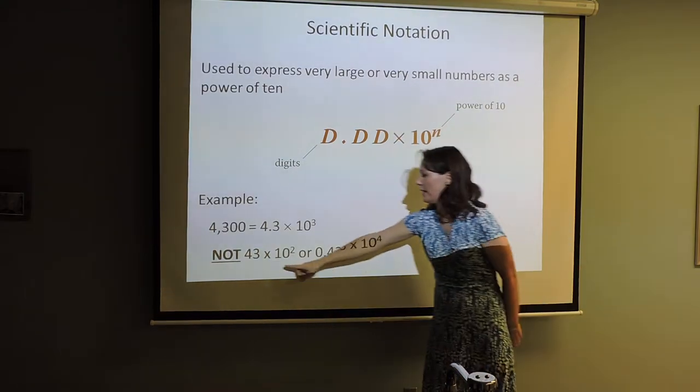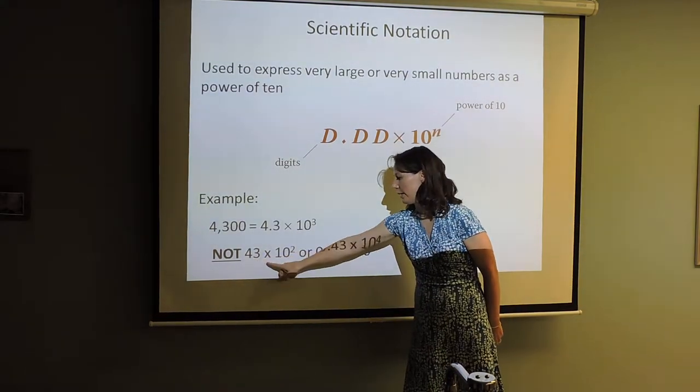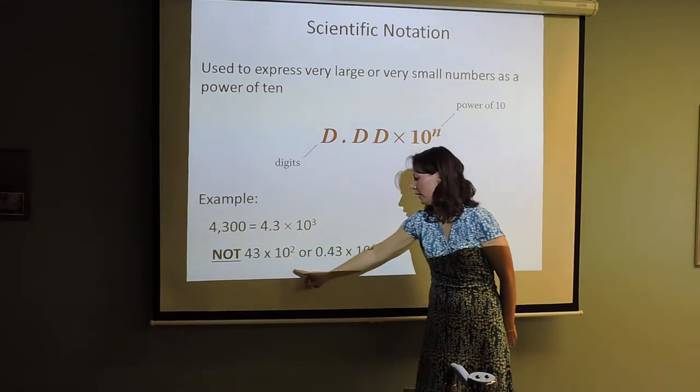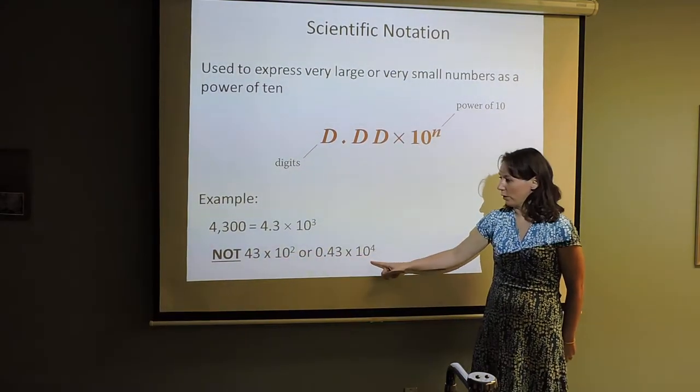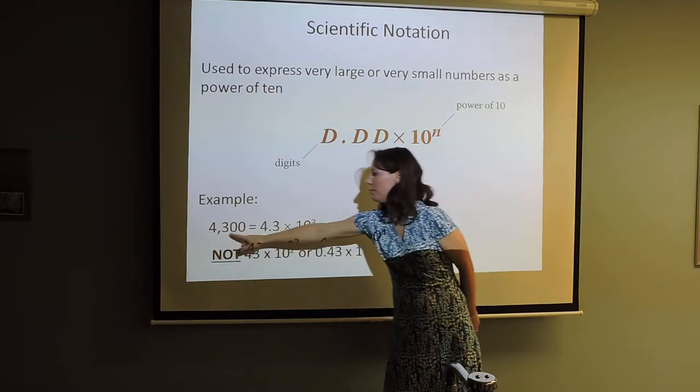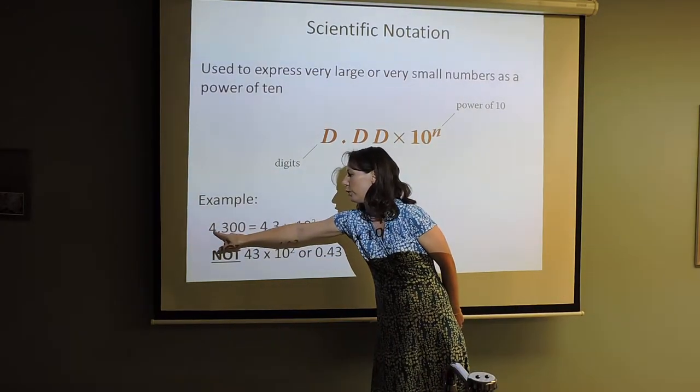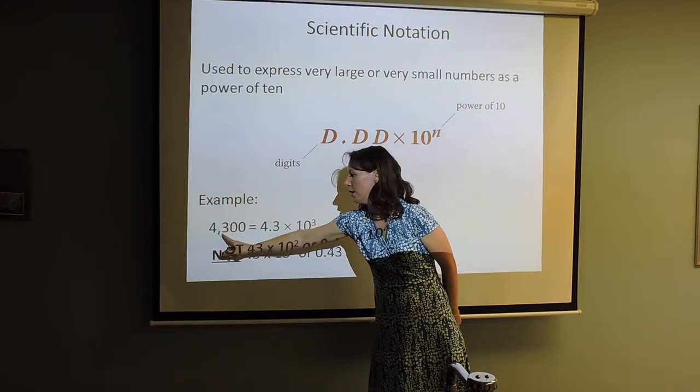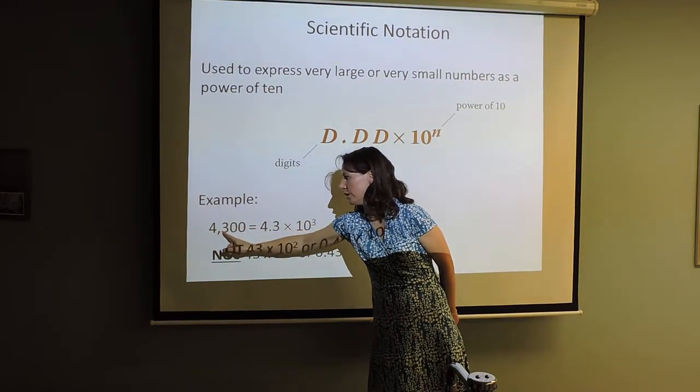Notice it's not 43 times 10 to the second, or 0.43 times 10 to the fourth. The decimal goes between the first two non-zero digits.